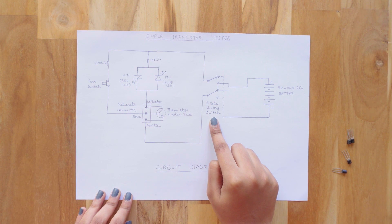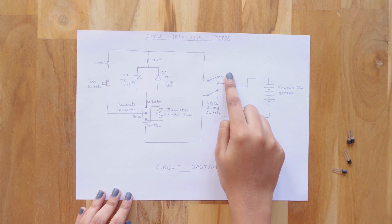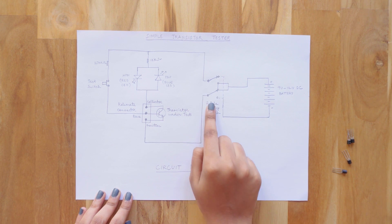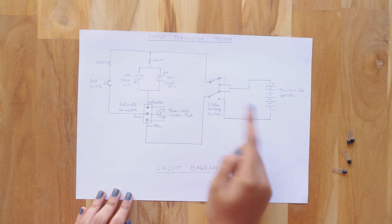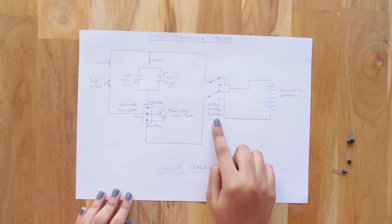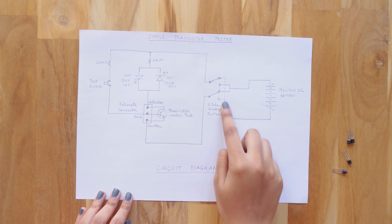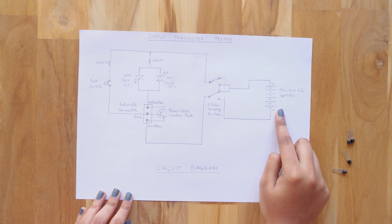Here is the 2-pole 2-way switch. In this circuit, this switch is used to find out whether it's a PNP or an NPN transistor. This switch does nothing but it reverses the polarity of the battery connected to the circuit when the position of it is changed.